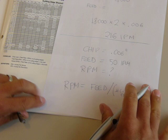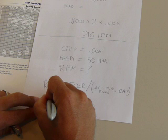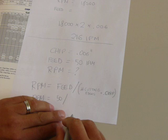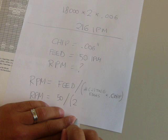that we have a feed rate of about 50 inches a minute and we need to divide that by the number of cutting edges which is 2 times the chip load which we know for this tool the chip load is 6 thousandths.